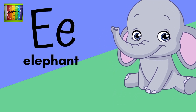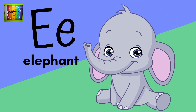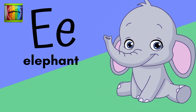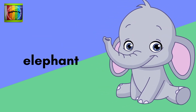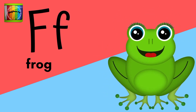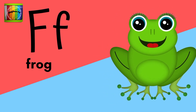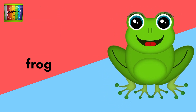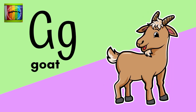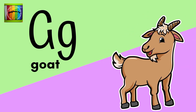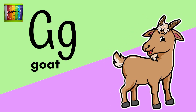E is for elephant. E, elephant. F is for frog. F, frog. G is for goat. G, goat.